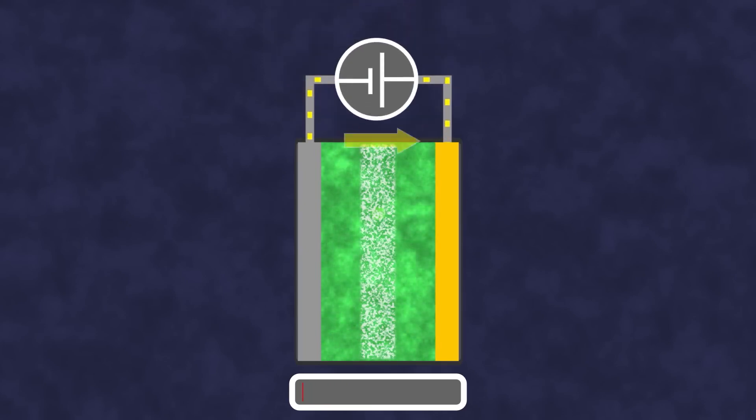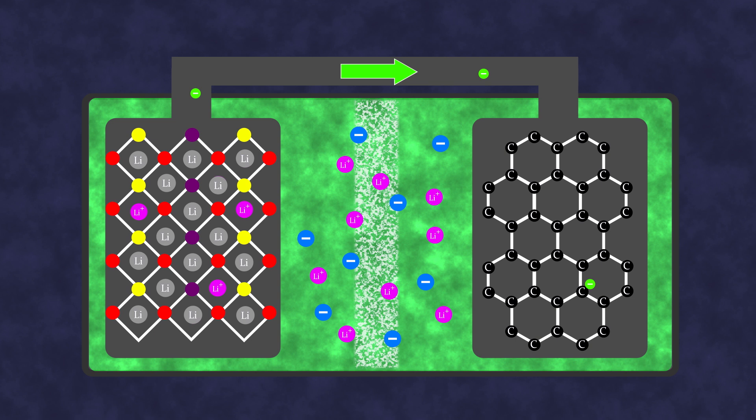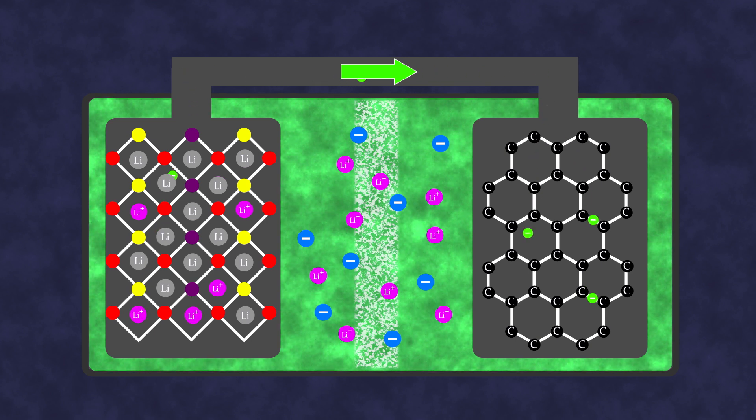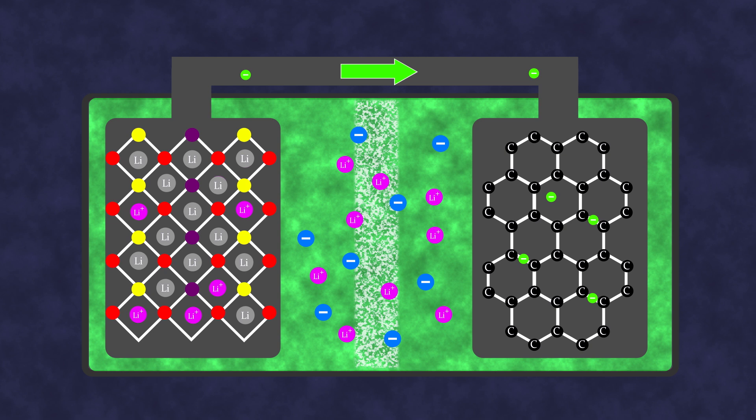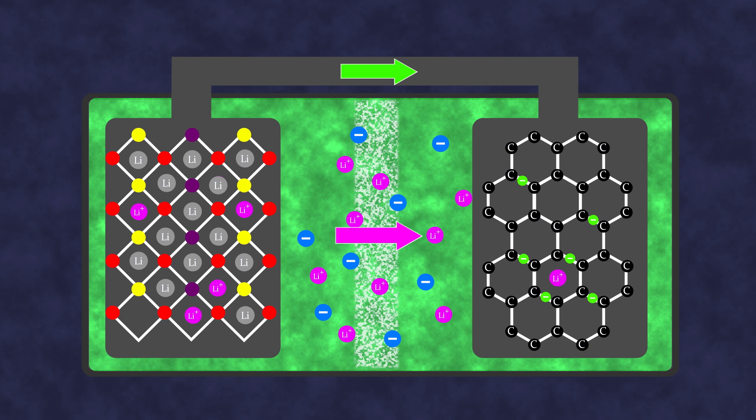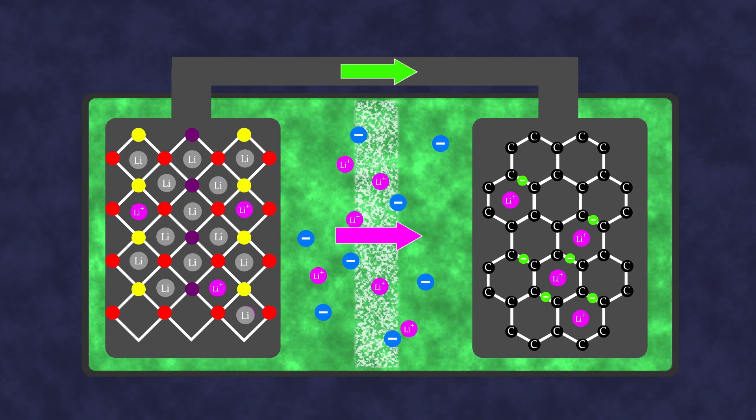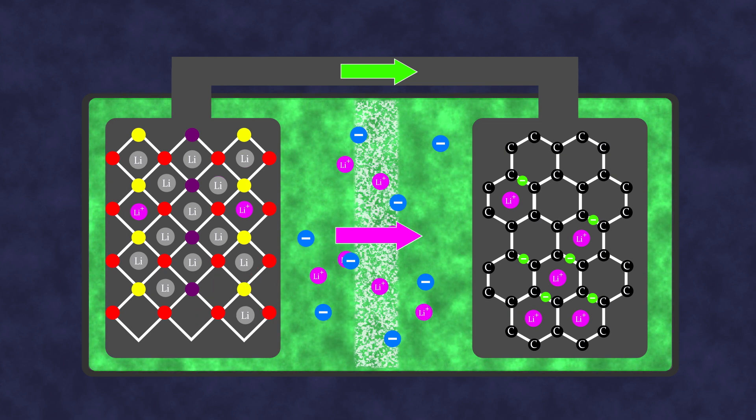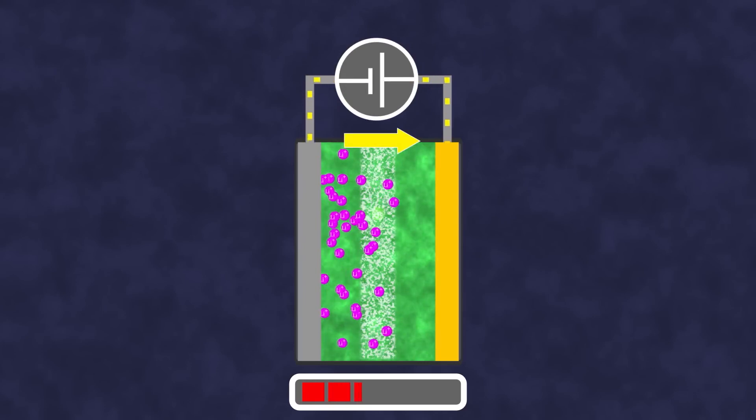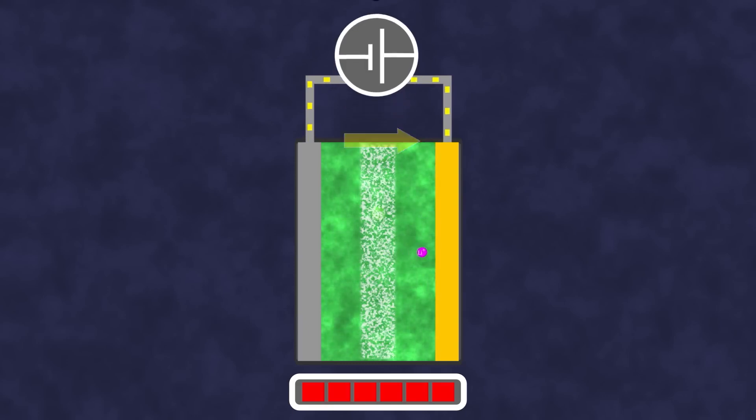But it can be recharged by applying an external electric field in the opposite direction. This field will pull electrons away from the lithium atoms on the cathode, turning them back into ions, and then drive these electrons back to the anode. This technology makes it possible to create far more capacious and powerful batteries than almost all galvanic cells that existed before its appearance. But it is not without its flaws.